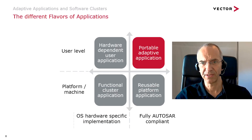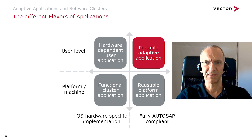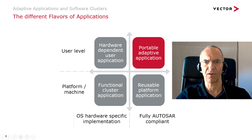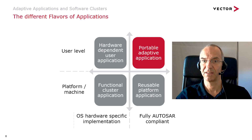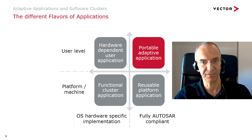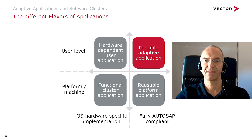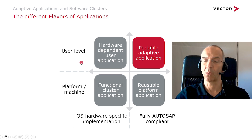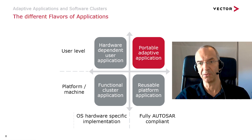When we talk about adaptive applications, often the question of portability comes up. An adaptive application is portable when it uses standardized interfaces only. This means that the developer is bound to the APIs offered by the foundation clusters, the services offered by the service clusters, and the APIs defined for the POSIX profile PSE 51. But there may be reasons to use non-standard interfaces as well, especially when there are hardware specifics to be supported or if you need some functionality which requires additional interfaces from the operating system.